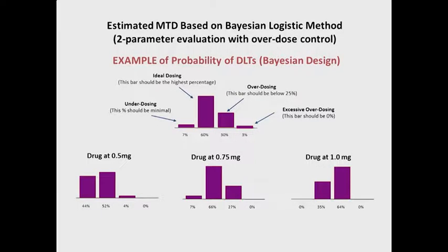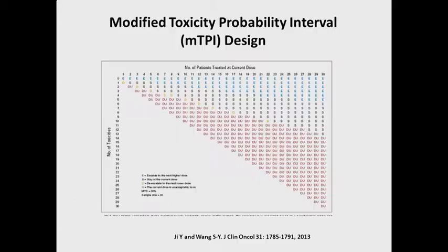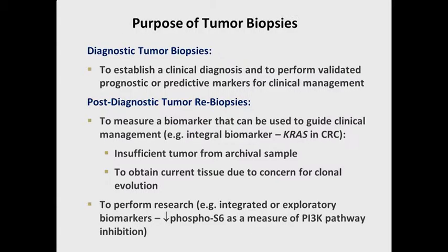On dose escalation methods: most of us are now familiar with going beyond the 3+3 rule-based design. We've been seeing a lot more model-based designs — whether EWOC or BLRM — requiring hands-on biostatistician expertise to fit the curve so that very little excessive overdosing or underdosing occurs, with the majority of patients in the ideal dosing zone after each cohort accumulates. There are also some hybrid rule-based/model-based adaptive designs that give better confidence around the recommended phase two dose.